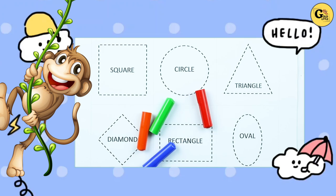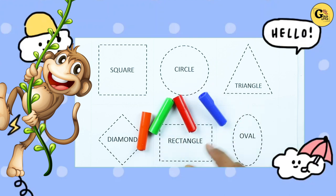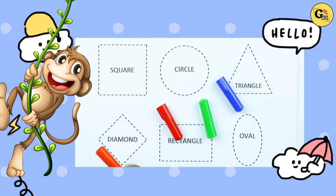Hello friends, today we learn shapes: square, circle, triangle, diamond, rectangle, oval with colors: red color, blue color, orange color, green color. Let's start.